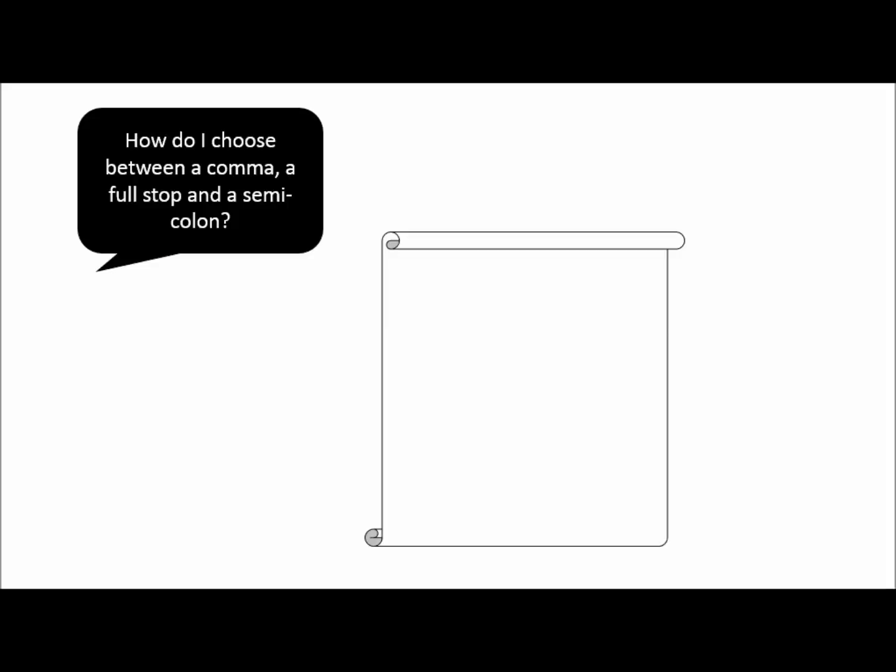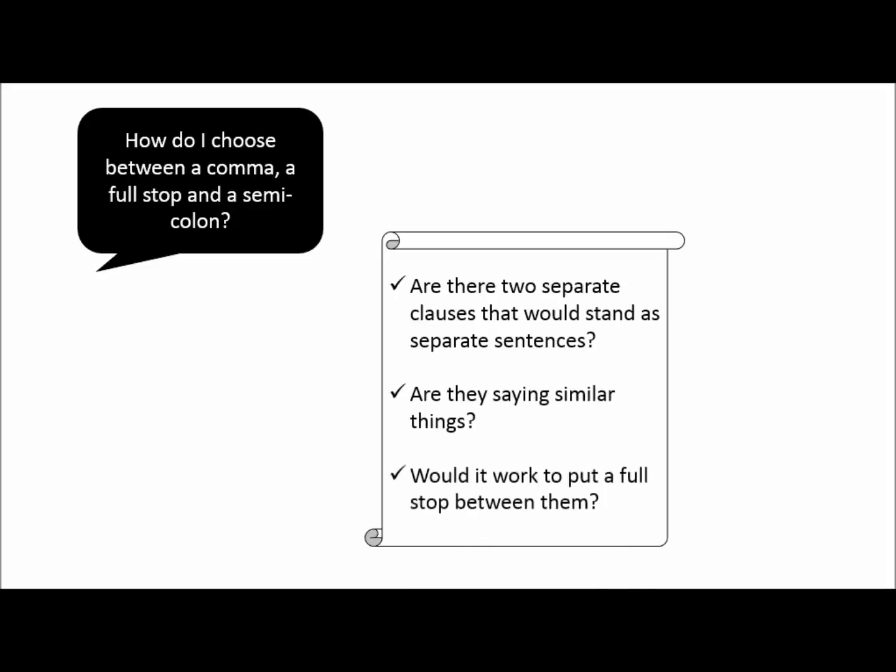So how do I then choose between using a comma, a full stop, and a semicolon? Well, here are a few things that I can be asking myself when I'm looking at the words in front of me. Are there two separate clauses that would stand as separate sentences? Are they saying similar things? Would it work to put a full stop between them?